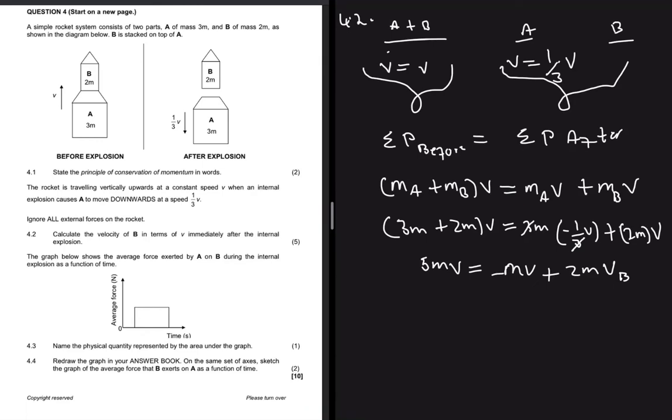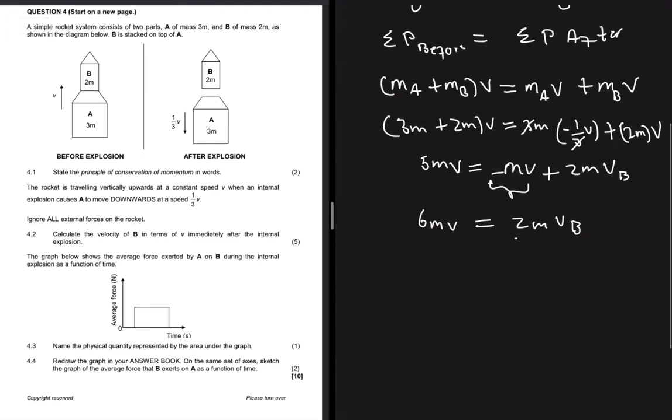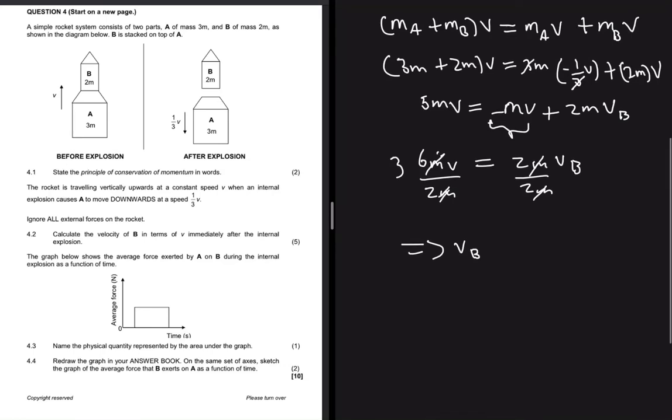The next step is to take this term to the left-hand side to isolate v_b. When it goes to the other side it changes sign, so we have 6mv equals 2m v_b. We divide both sides by 2m to isolate v_b.